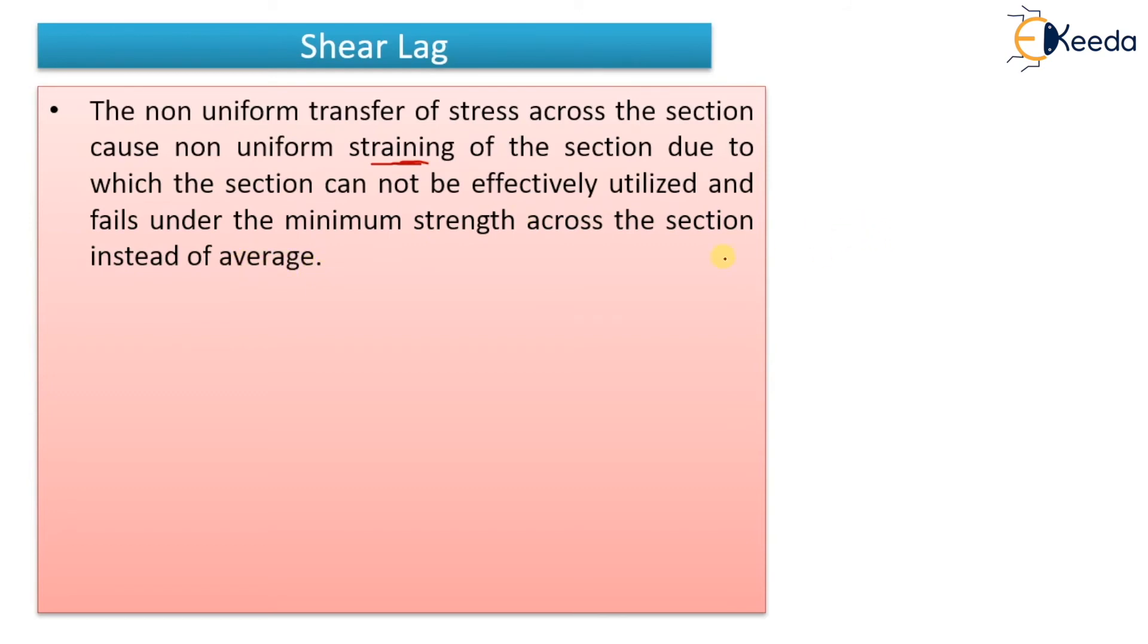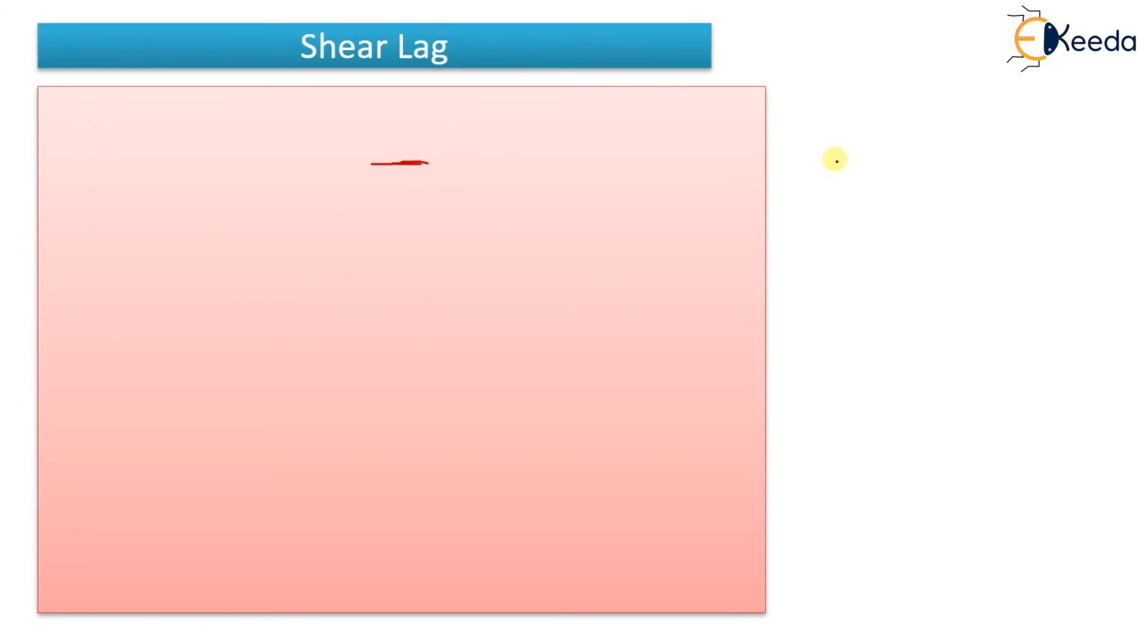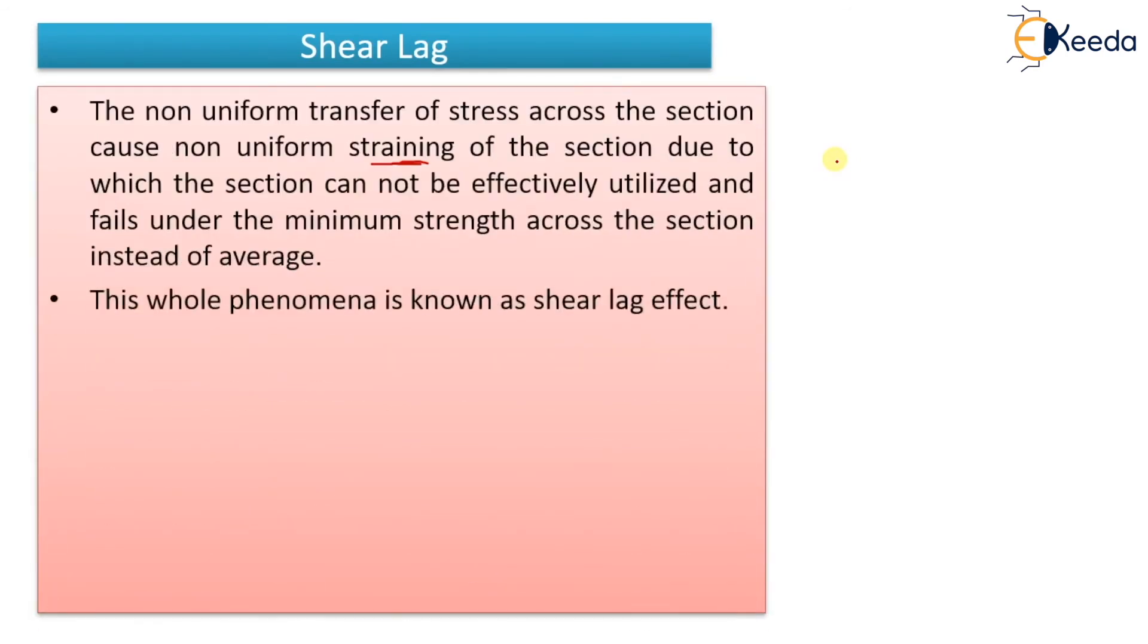In the previous diagram, there was a gusset plate and an angle like this. What happens is there will be non-uniform straining, means there will be more pressure on this point and less pressure on this outstanding leg. Due to that, there will not be proper or effective utilization of the strength, and thus there will not be proper strength throughout the section. This particular phenomenon is known as shear lag effect.